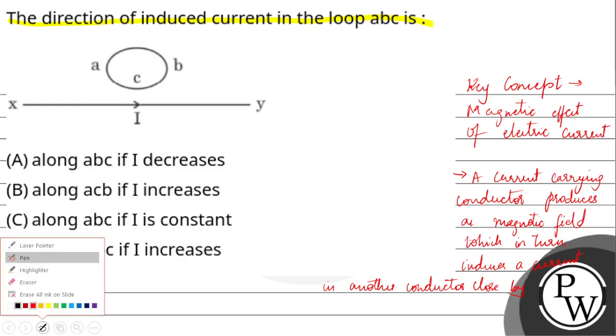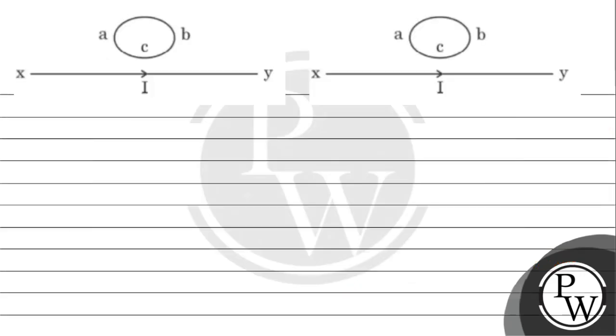To solve this question, first we will analyze this diagram, then we will mark the correct option. So this diagram has been given that there is this current which is flowing through this straight wire.